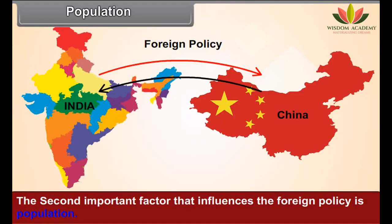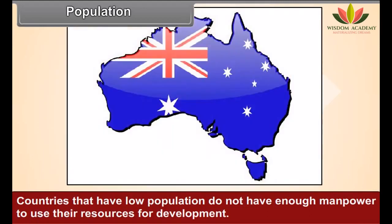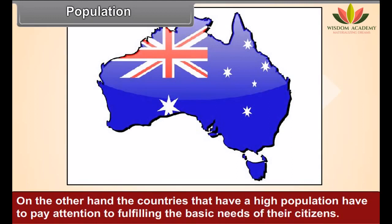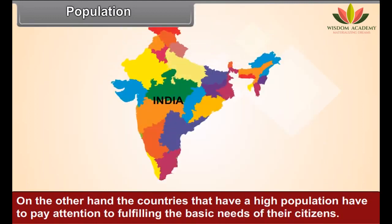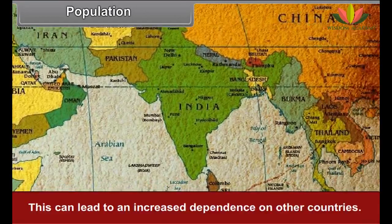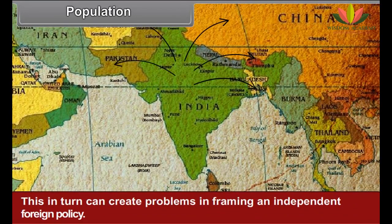Population. The second important factor that influences the foreign policy is population. Countries that have a low population do not have enough manpower to use their resources for development. On the other hand, the countries that have a high population have to pay attention to fulfilling the basic needs of their citizens. This can lead to an increased dependence on other countries, which in turn can create problems in framing an independent foreign policy.